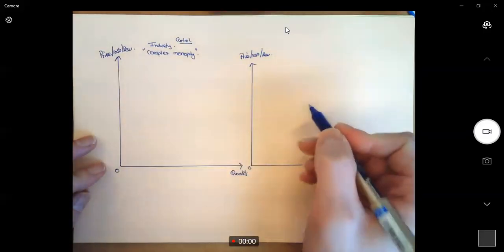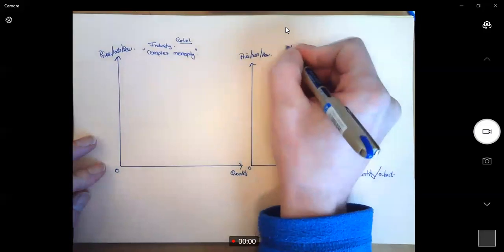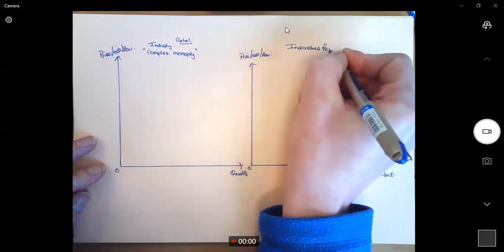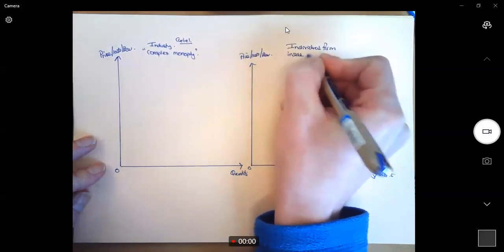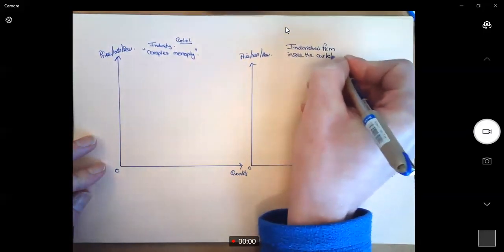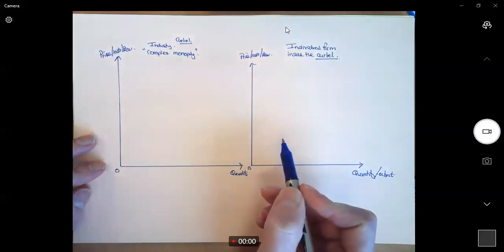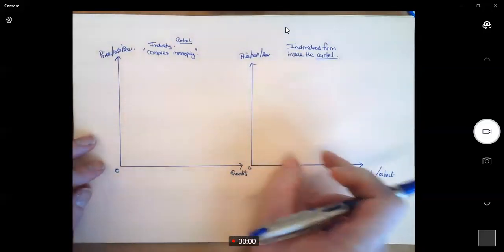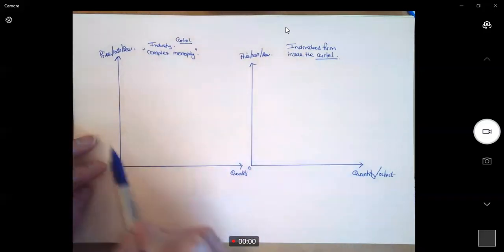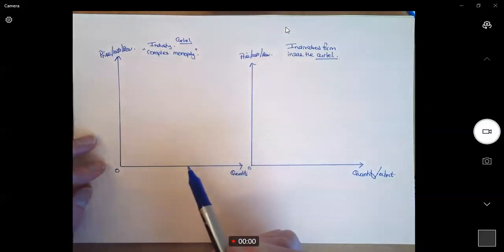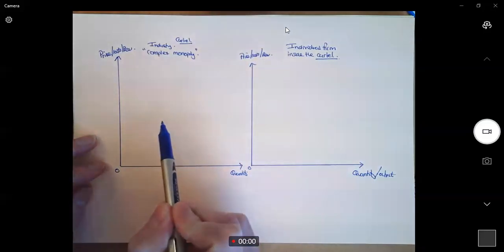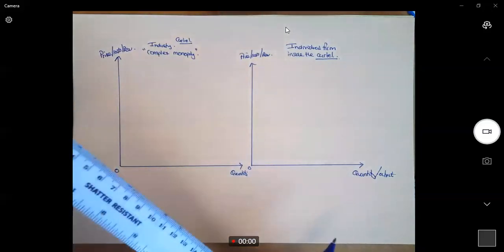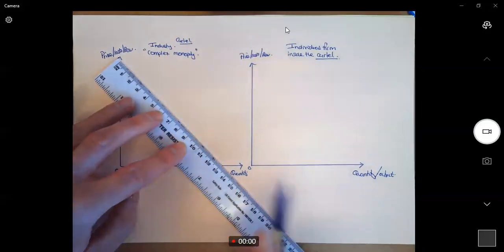The diagram on the right-hand side is the individual firm from inside the cartel. This is similar to monopolistic competition — it's a two-panel analysis where the impact of the cartel is going to influence the behaviour of the individual firm. When we draw the diagram, you'll see similarities, but I'm looking at how the impact of the industry affects the individual firm. A complex monopoly or cartel diagram is very similar to that of a monopoly.